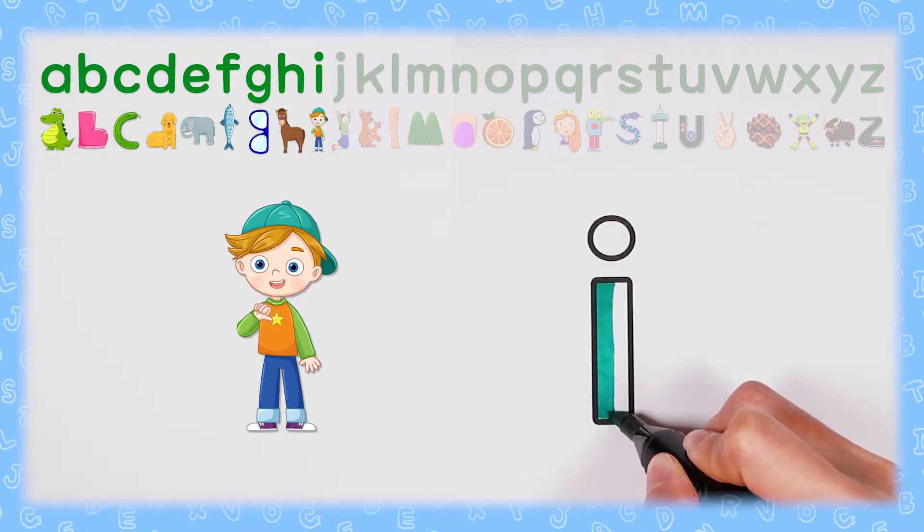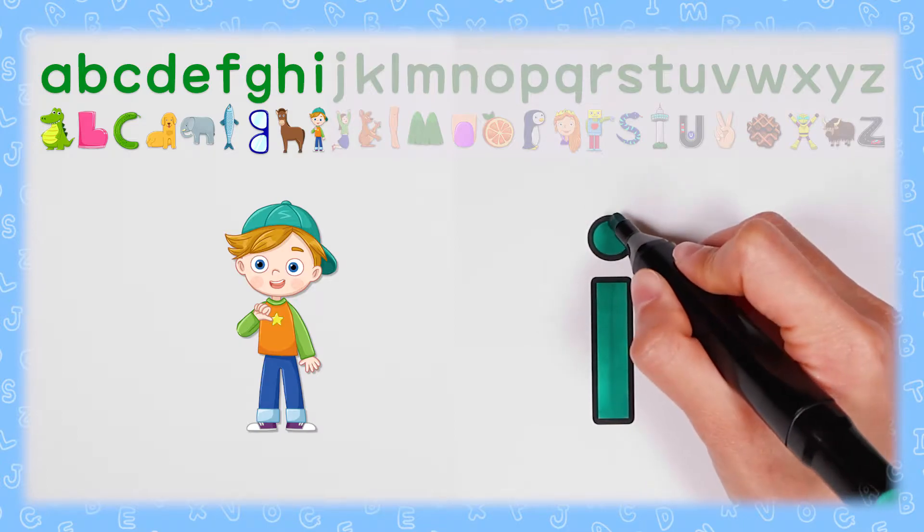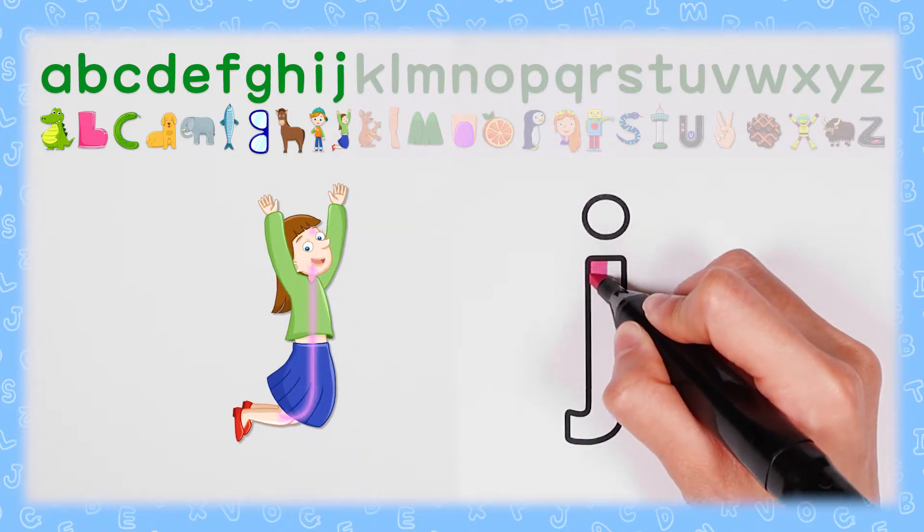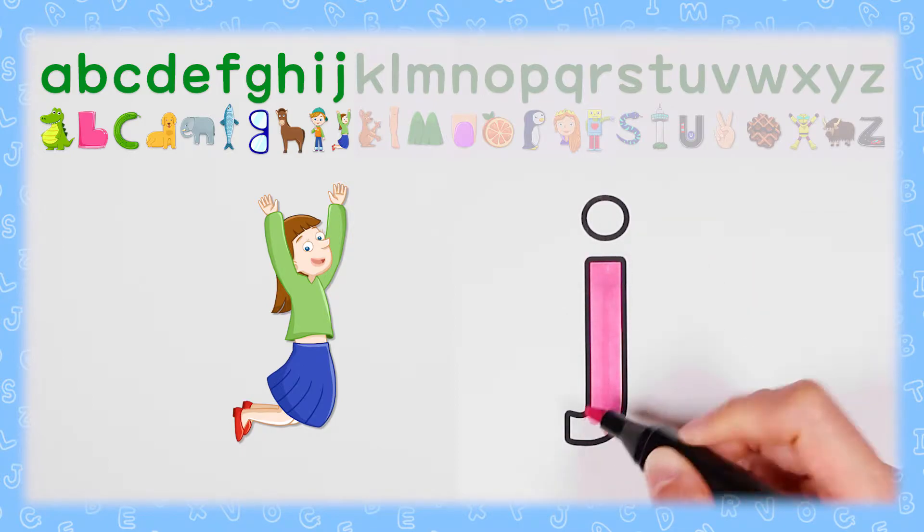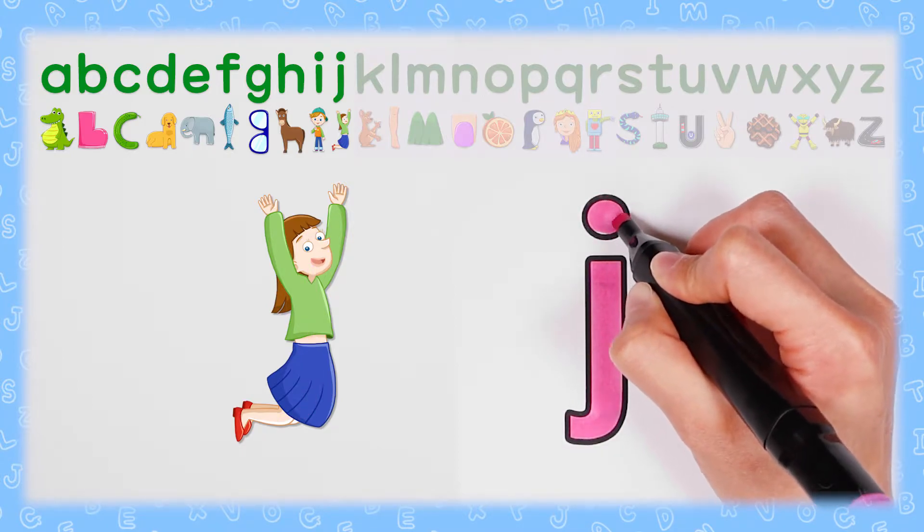I, 바로 나 I I (that's me). J, 두 발 들고 점 J J (lifting two feet with a dot)